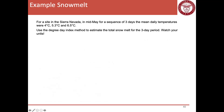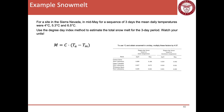As an example: for a site in the Sierra Nevada in mid-May over a sequence of three days, the mean daily temperatures were 4°C, 5.3°C, and 6.5°C. Using the degree-day method to estimate total snow melt for the three-day period, I'll use this equation: M = C × (TA − Tm). I encourage you to pause the video, work through this, and then compare your answer. For mid-May in the Sierra Nevada, I'll use C = 0.10 from the table. Since I'm using degrees Celsius, I need to apply the 4.57 conversion factor.